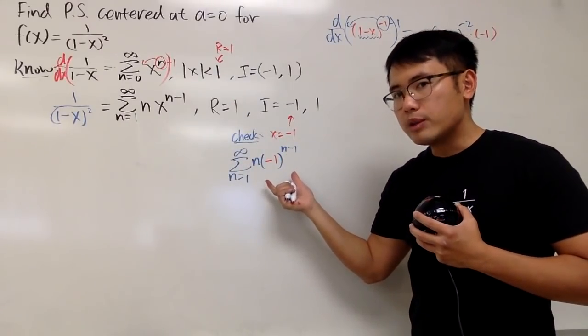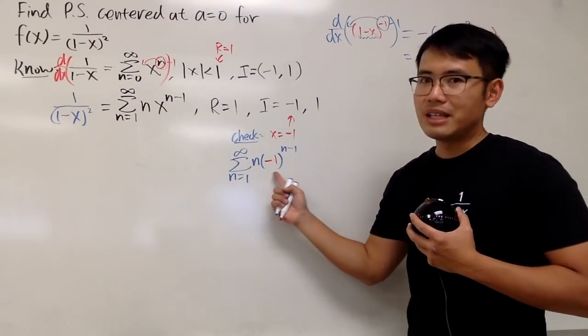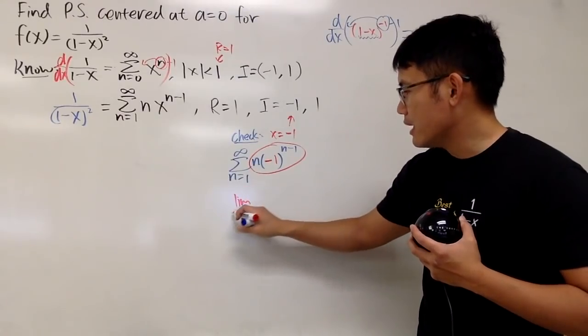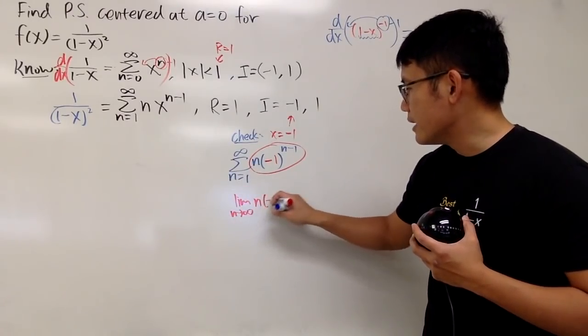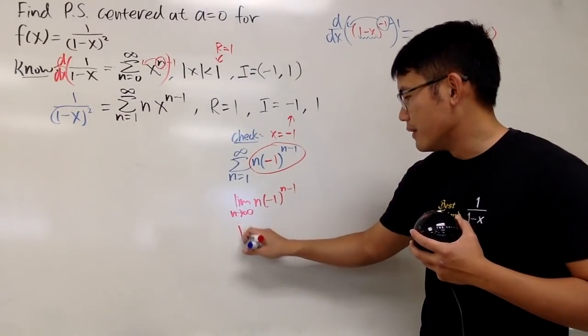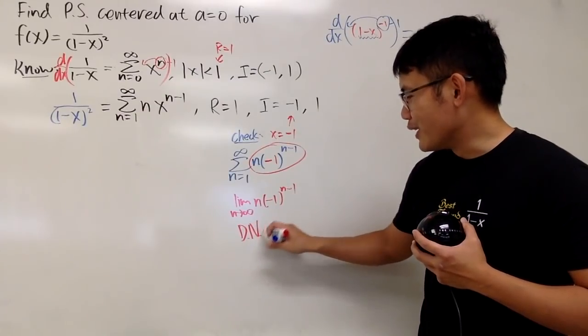This right here is alternating, but this is n times that. Unfortunately, this doesn't even go to 0 in the first place. If you look at this, if you take the limit as n goes to infinity of n times (-1) to the (n-1), this right here technically is DNE, doesn't exist situation.